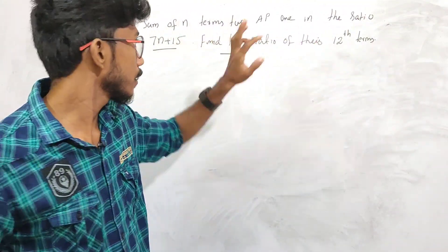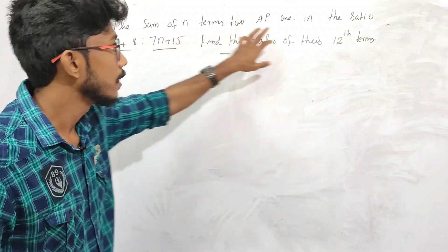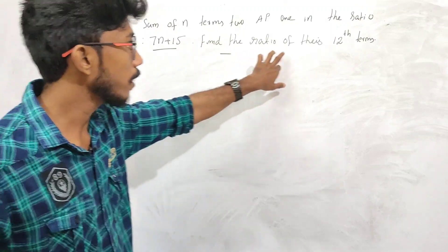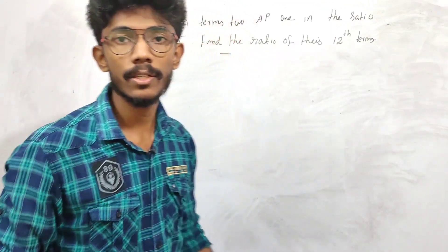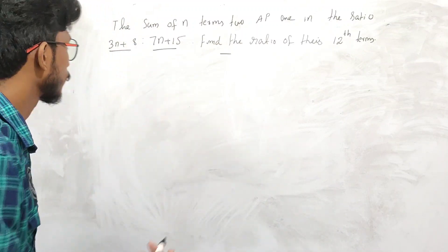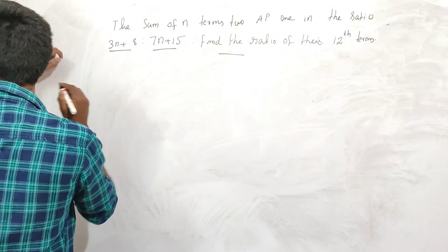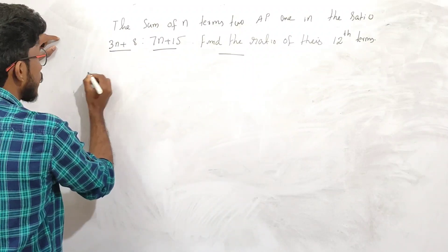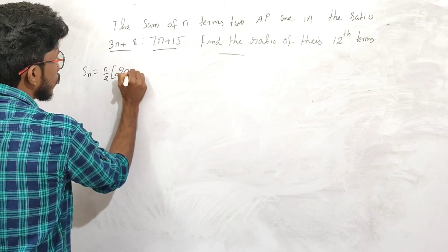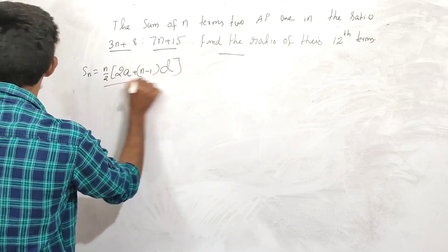In two arithmetic series, we look at the sum of n terms and the ratio of the 12th terms. Generally, the sum of n terms is given by the standard formula.